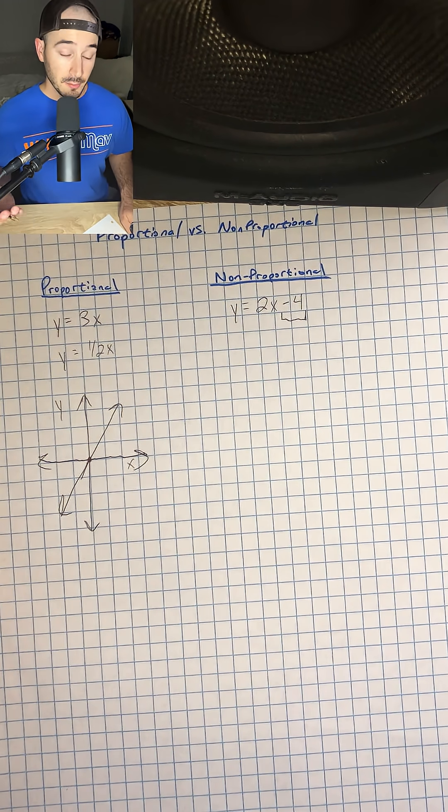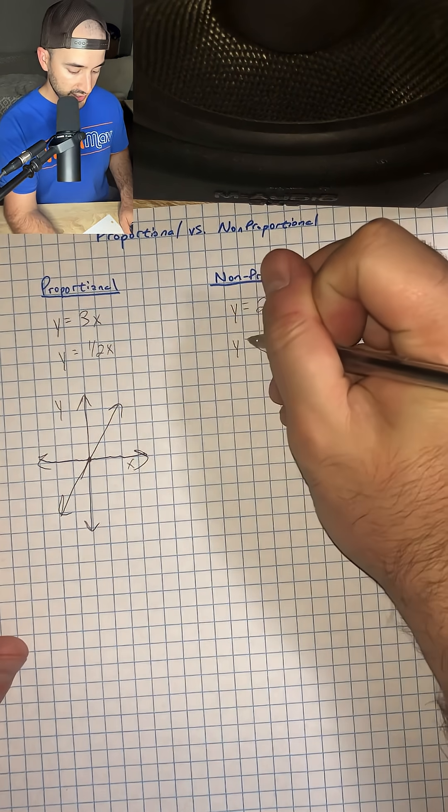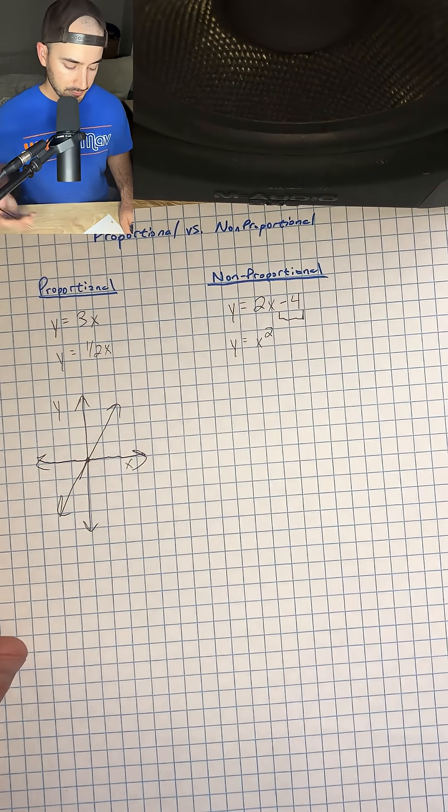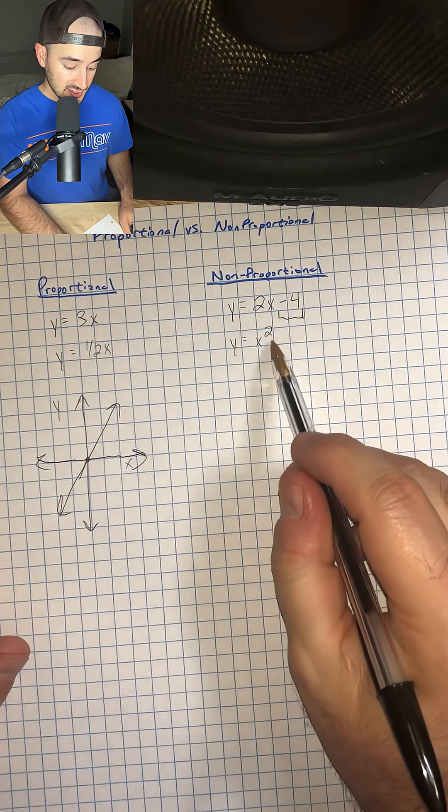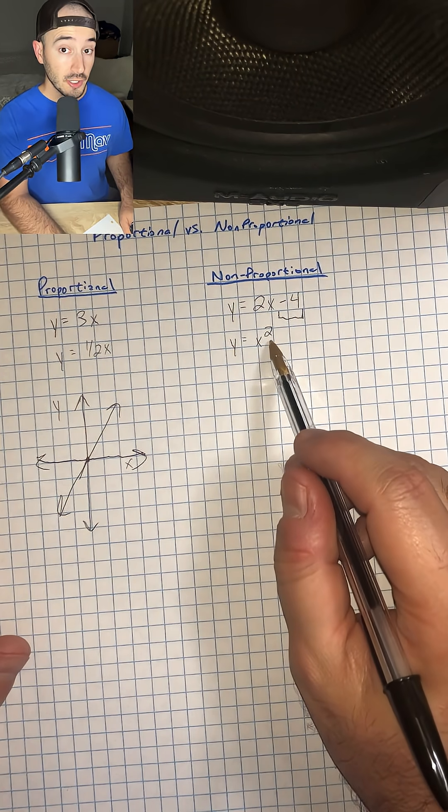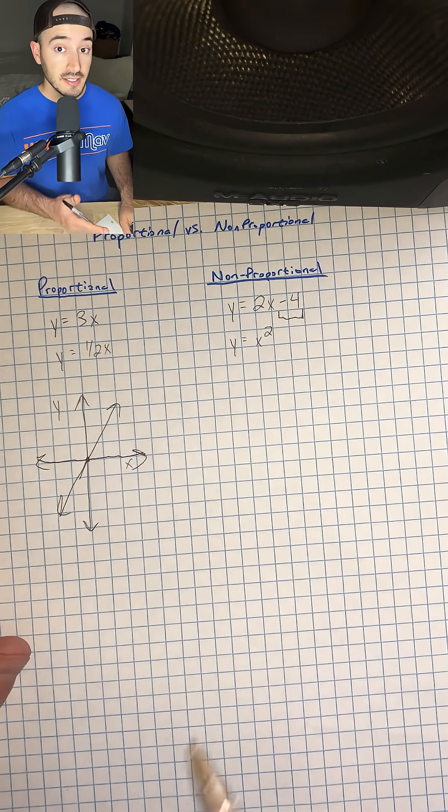Another example of non-proportional would be y equals x squared, because that is not a linear equation. We have a squared in there, and so if we were to graph that, it would not be a straight line.